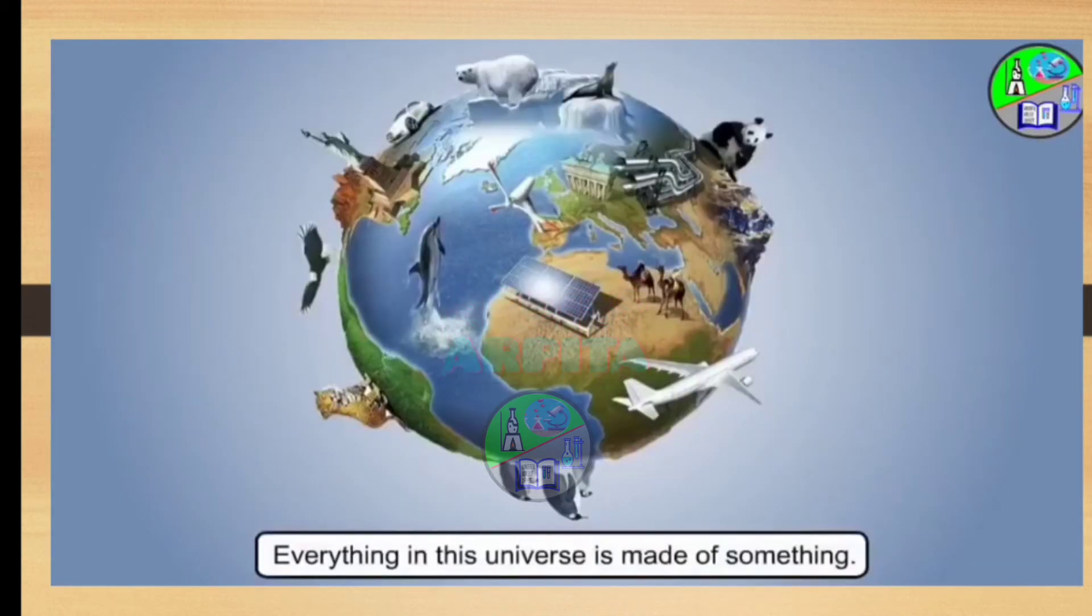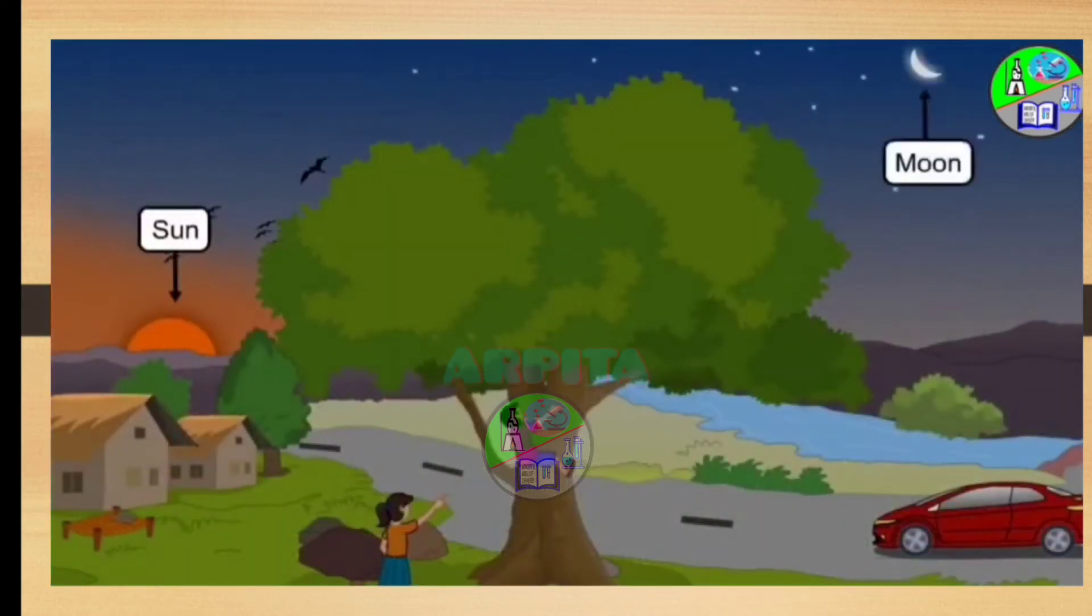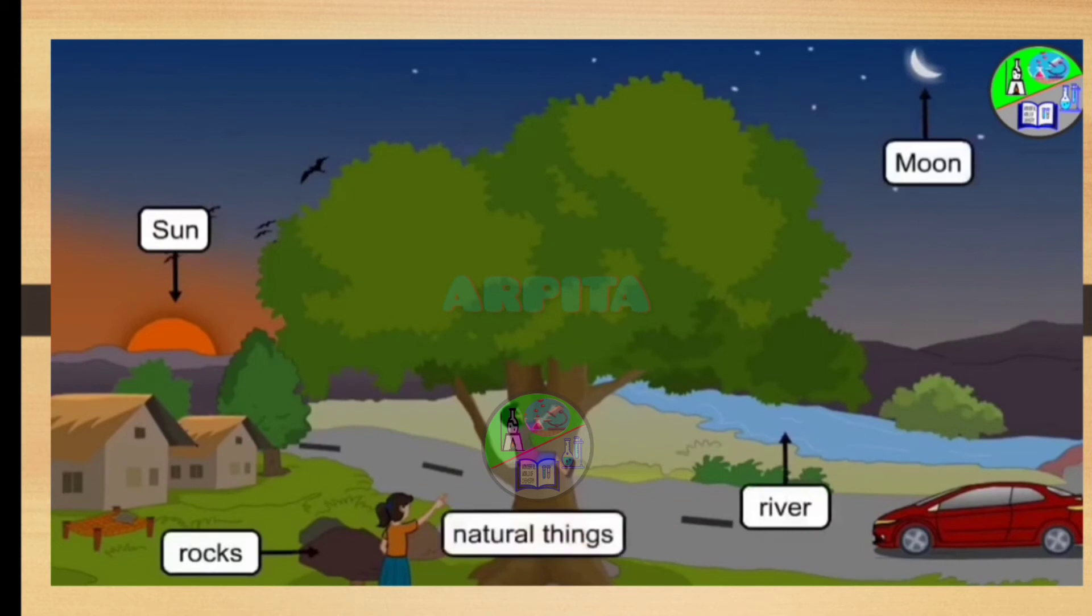Everything in this universe is made of something. Let us have a look at it. The sun, the moon, river and rocks are all natural things. They are found in nature. They are not made by man.